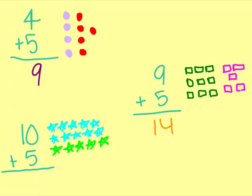Now, let's add all the stars together. 1, 2, 3, 4, 5, 6, 7, 8, 9, 10, 11, 12, 13, 14, 15. 10 plus 5 is 15.